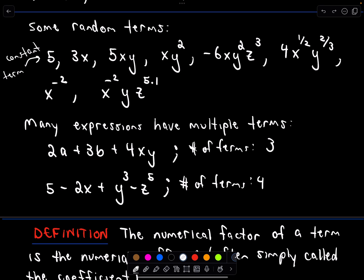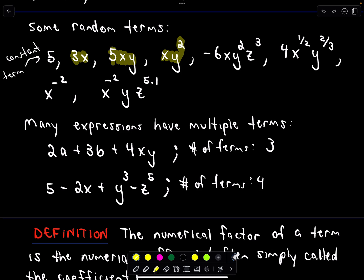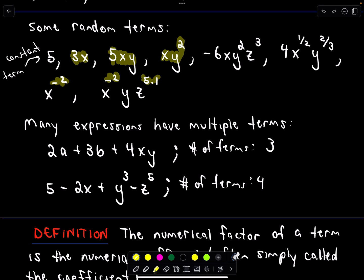So that's called a constant term. Then we have some other examples: a number multiplied by a variable, the number 5 multiplied by two variables x and y, and x times y where y is raised to the second power. You can have negative coefficients and multiple variables, and variables can have fraction exponents, negative exponents, or decimal exponents. A term can have as many variables as you want.